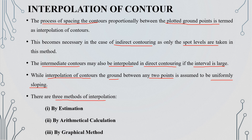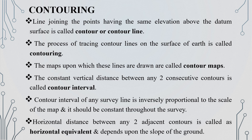We have three methods of interpolation: estimation, arithmetic calculation, and graphical method. Next, we have contouring. We have the contour line — a line joining points having the same elevation above the datum surface is called a contour or contour line.